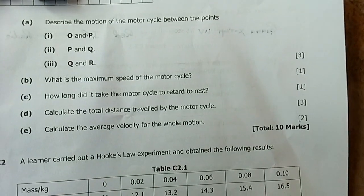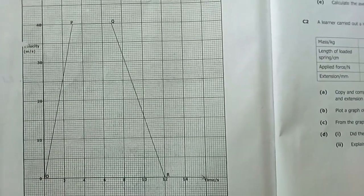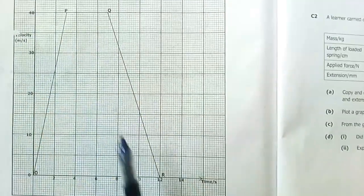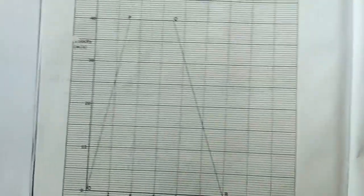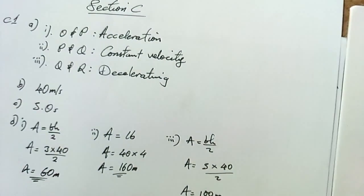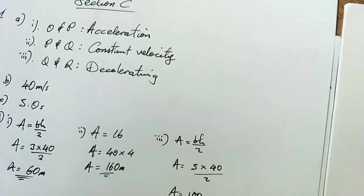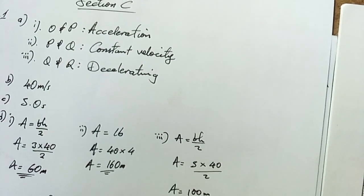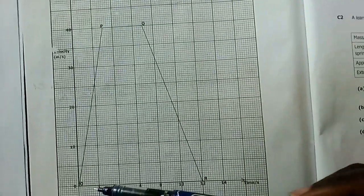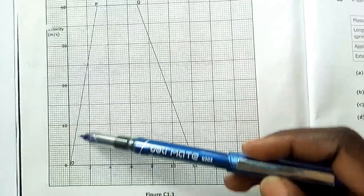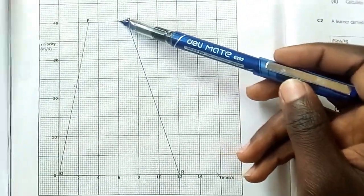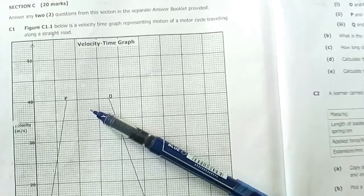The first question reads: describe the motion of the motorcycle between the points OP, PQ, and QR. Let me just take a look at the graph again. Maximum velocity reached is 40, maximum time is 12 seconds. This can be divided into three ships. My motion is that from OP the motorcycle is accelerating, PQ it was constant velocity, and then QR it was decelerating. The gradient of a velocity-time graph represents acceleration. So this motorcycle was accelerating because velocity was going up, then velocity became constant therefore there was no change in velocity meaning that acceleration was zero. This part here, there's deceleration.